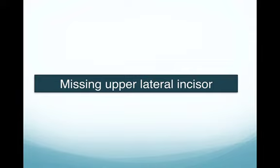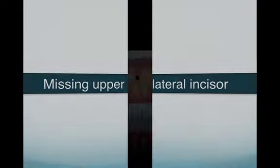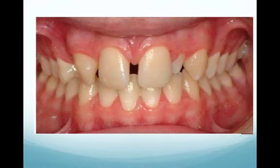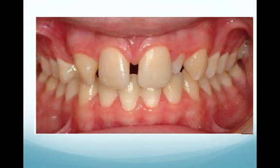Hypodontia can affect one or more teeth. Most commonly affected are the wisdom teeth, followed by the lower second premolar, then upper lateral incisors, then lower central incisors. Regarding missing upper lateral incisors, we typically see bilateral absence, or sometimes a missing lateral on one side and a peg-shaped lateral on the other. Missing lateral incisors usually result in mild to moderate spacing.